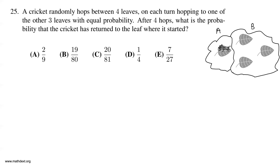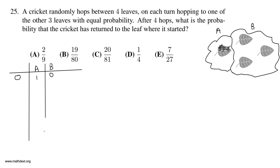After zero hops, the cricket is in state A 100% of the time. So the probability that the cricket is in state A is one, and the probability that the cricket is in state B is zero. I'm going to make a chart to keep everything in order, and eventually we want to find the probability that the cricket is in state A after four hops.